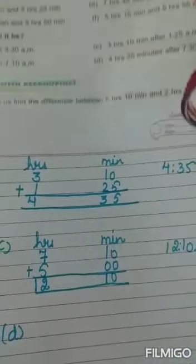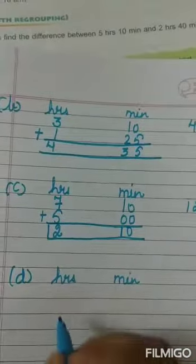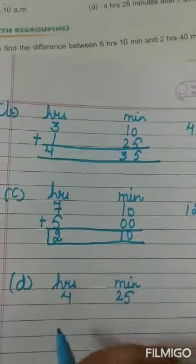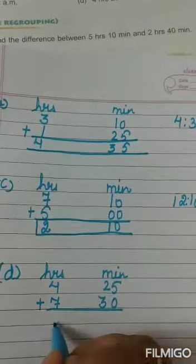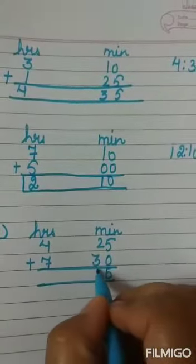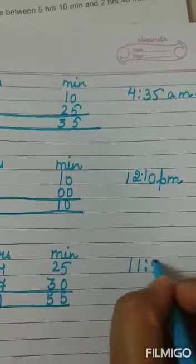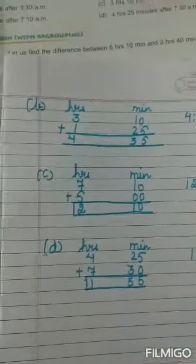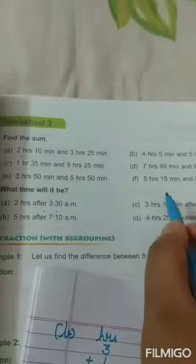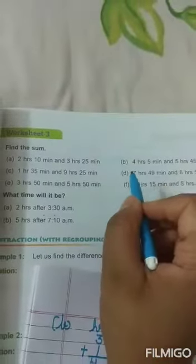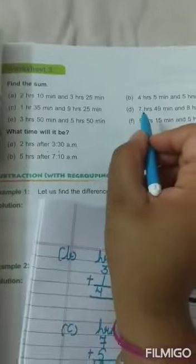अब D part: 4 hours 25 minutes after 7:30 A.M. After है means plus करना होगा। 5 plus 0 is 5, 3 plus 2 is 5, 7 plus 4 is 11. So time is 11:55. अभी 12 नहीं हुए, तो यह A.M. रहा। हमने 4 parts करवाए, और इसके भी addition के 4 parts करवाए। बट यह 2 parts आप rough notebook में पक्का practice करना, तब ही आपको addition के sums अच्छे से समझ में आएंगे।